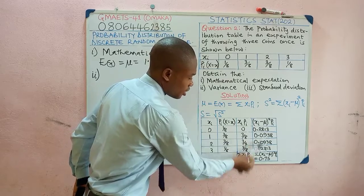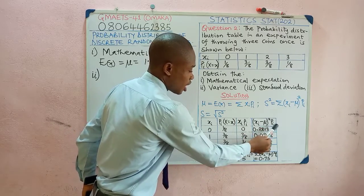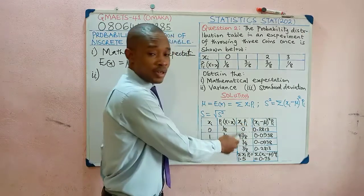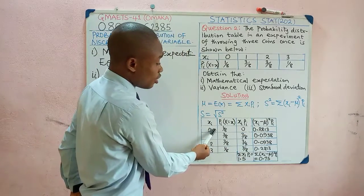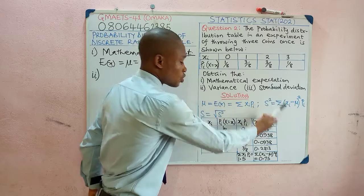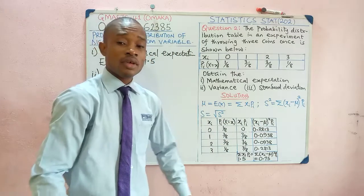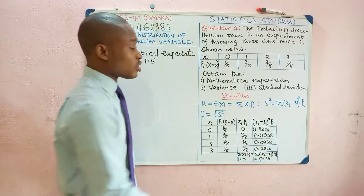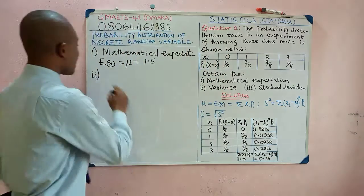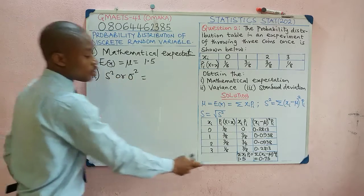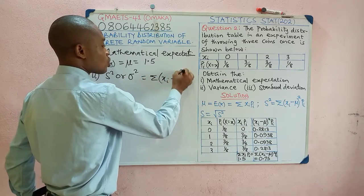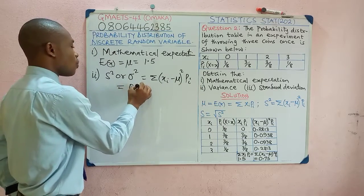To obtain the variance, you need the column: (xi minus the mean) squared times pi. Before working on this column, you must have obtained your mathematical expectation because this column depends on it. Compute xi minus the mean, square it, then multiply by the corresponding probability. Once you sum everything, the summation is 0.75. That summation directly defines your variance: σ² = Σ(xi − μ)² · pi = 0.75.